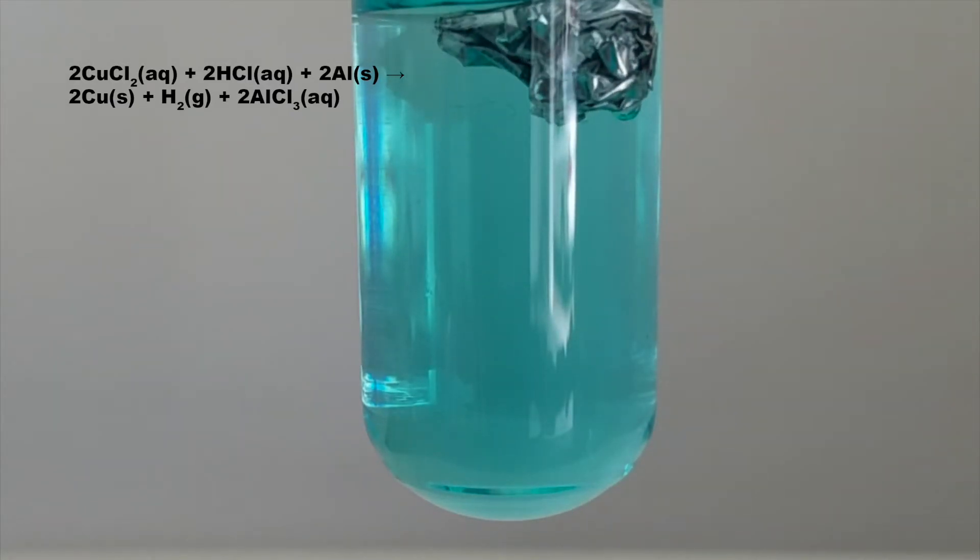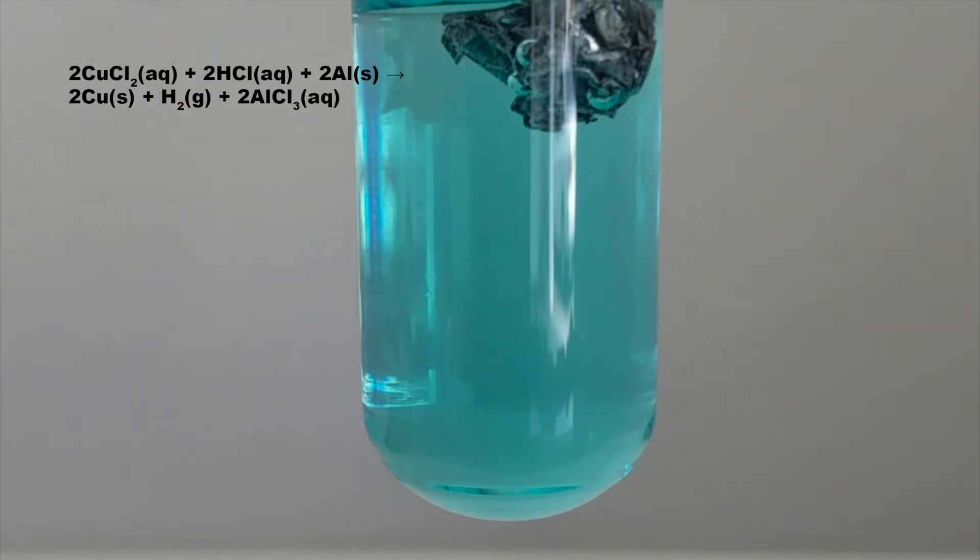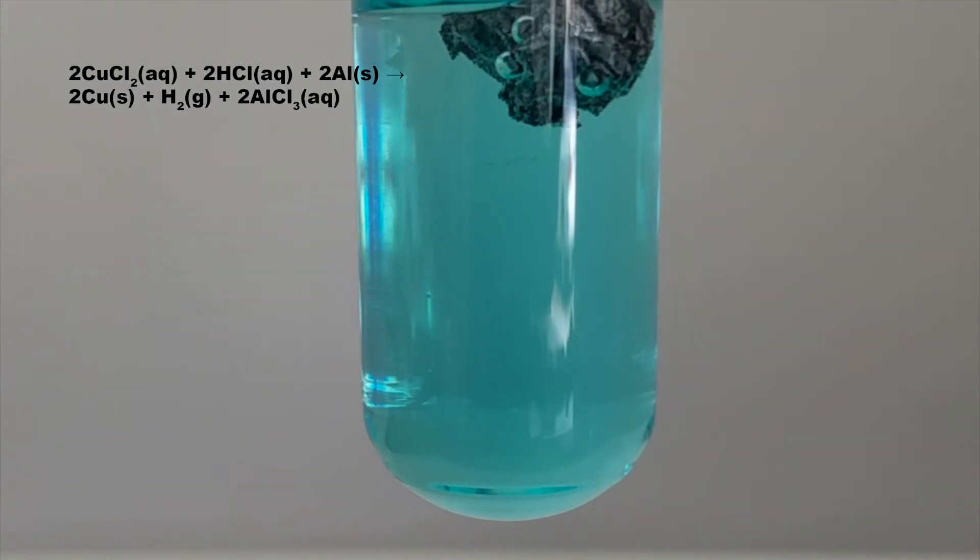I add a small chunk of aluminum foil to the solution, which at the beginning reacts slowly. However, over the course of the next few seconds, it builds up in speed, and you can see hydrogen gas bubbles forming and the red copper precipitating out of solution on the aluminum metal.